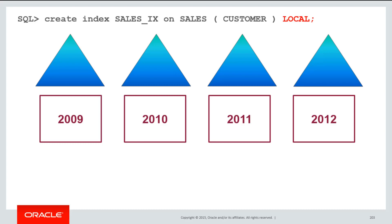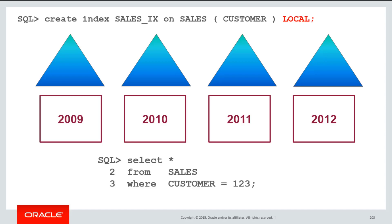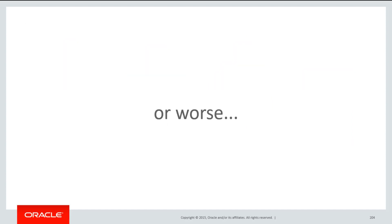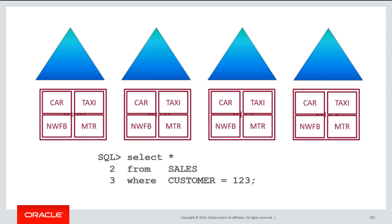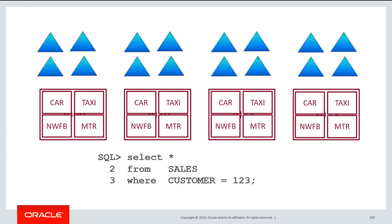If I have a local index, for example, on my customer column here, what happens when I do select from sales where customer equals 1, 2, 3? That's actually quite expensive because customer 1, 2, 3 might be in any of those local partitions. I have to do four index traversals to see what's going on. It might be worse — as we spoke about before, you could have sub-partition tables. If a table is sub-partitioned, for example, by year and then by car manufacturer, then looking for customer 1, 2, 3 might be looking at dozens of sub-partitions to actually go and get that data. It could be very expensive to do queries for a particular customer.